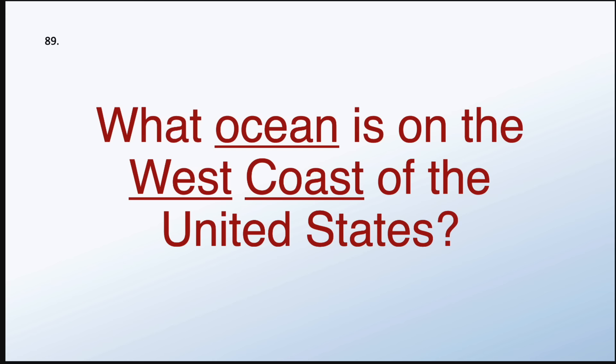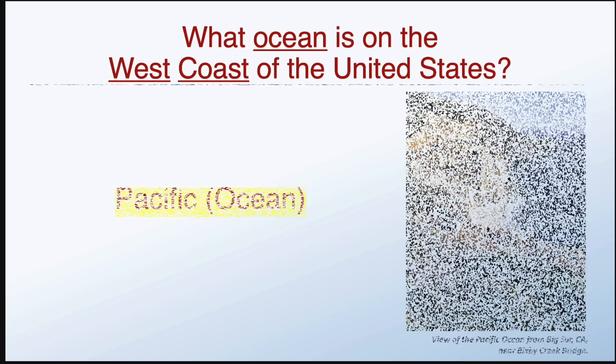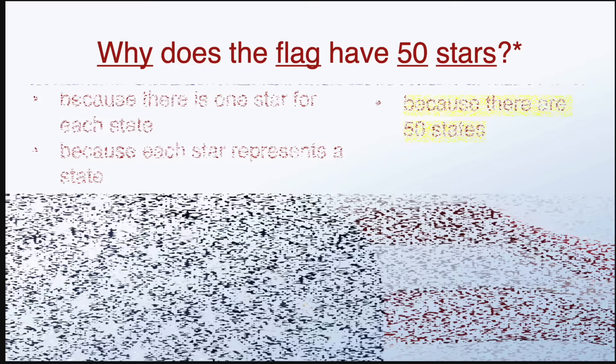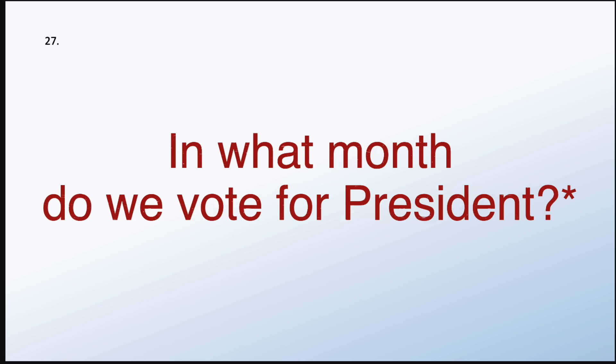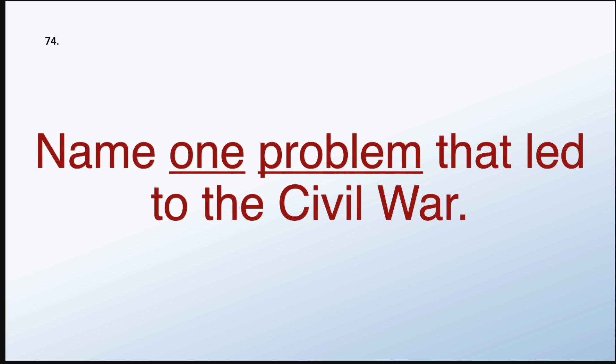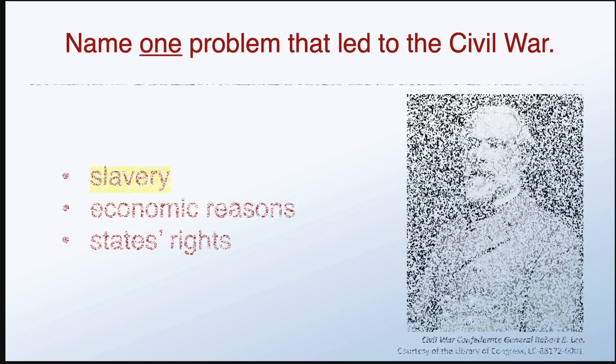What ocean is on the west coast of the United States? The Pacific Ocean. Why does the flag have 50 stars? Because there are 50 states. In what month do we vote for president? November. Name one problem that led to the Civil War. Slavery.